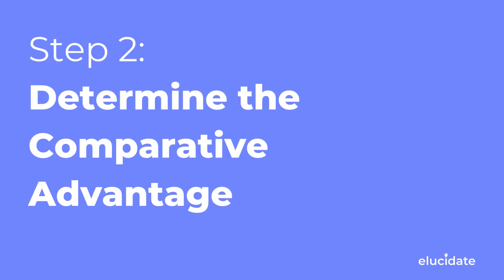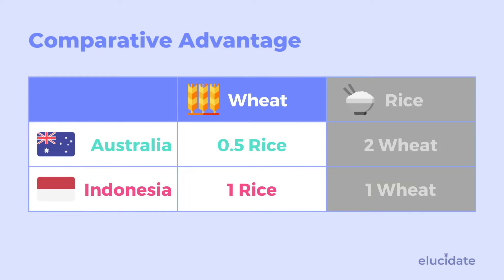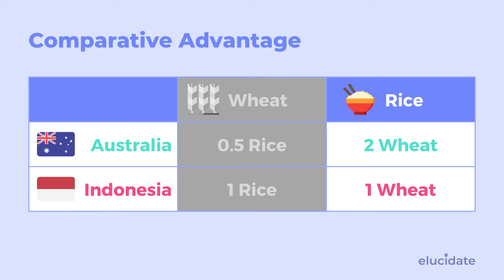Step two: determine the comparative advantage. The theory of comparative advantage states that a country should produce what it has the lowest opportunity cost in. For wheat, Australia has an opportunity cost of 0.5 rice, whereas Indonesia has an opportunity cost of one rice — so Australia should produce wheat. For rice, the opportunity cost of one unit of rice is two wheat for Australia, or one wheat for Indonesia — so Indonesia has the lowest opportunity cost and should produce rice. Australia should produce nothing but wheat and Indonesia should produce nothing but rice.